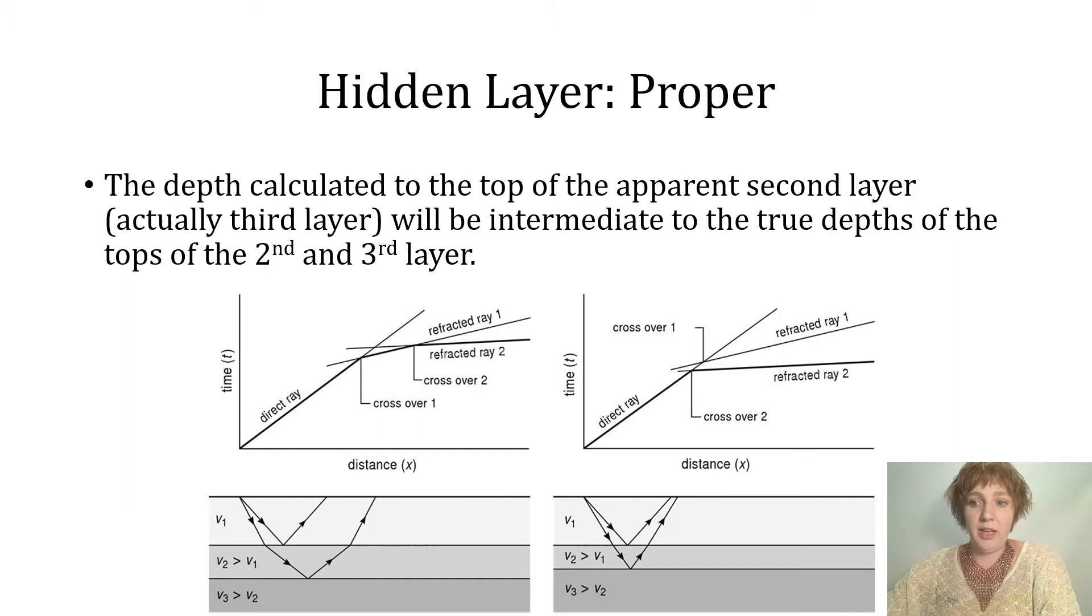When you look at this data set, all you're going to see is two layers. There's your first layer, there's your second layer. It's going to give you a fine velocity, but that intercept time is going to give you a depth that's not quite right for any of those layers.